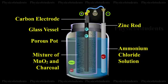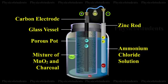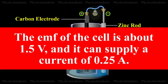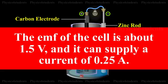The Leclanché cell is useful for supplying intermittent current. The EMF of the cell is about 1.5 volts, and it can supply a current of 0.25 amperes.